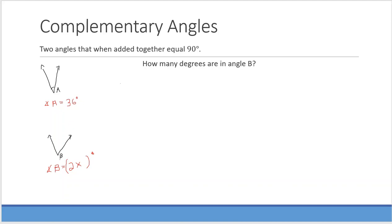Complementary angles are two angles that when added together equal 90 degrees. We need to find how many degrees angle B is. Just like the last problem: angle A plus angle B equals 90 degrees. Angle A is 36 degrees and angle B is 2x, so 36 plus 2x equals 90. Subtracting 36 from both sides to isolate x.